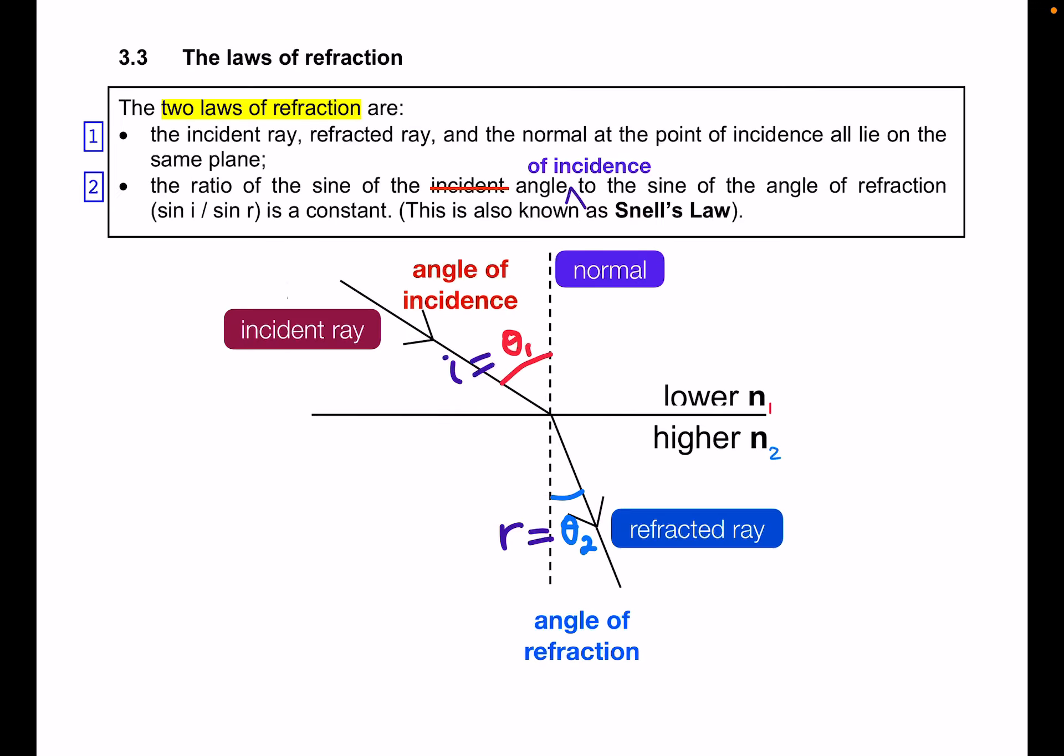The laws of refraction. The two laws of refraction are: one, the incident ray, the refracted ray, and the normal at the point of incidence all lie in the same plane or same flat surface.